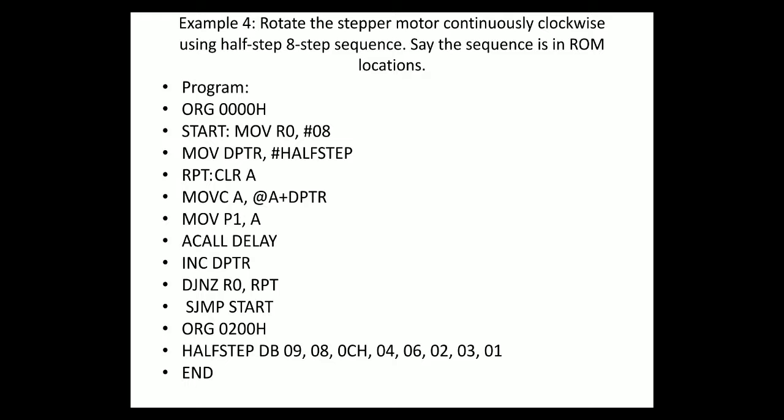Suppose I ask you to change this program for anticlockwise — what is your possible solution? Very simple: here there is no rotate right or rotate left — if your answer is rotate left and right, you are wrong. What I have to do is make the sequence in reverse order. Whatever the sequence you have — 09, 08, 0C, 04, 06, 02, 03, 01 — write it in reverse order: 01, 03, 02, 06, 04, 0C, 08, 09. If you do this, the same program will do anticlockwise rotation using half step.